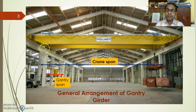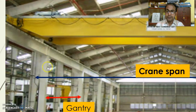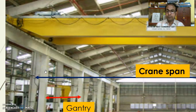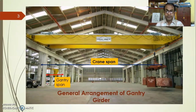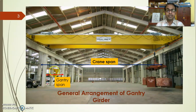We can see here the columns provided — this is a stepped column where the lower thicker portion supports the gantry girders and is known as the crane leg. The upper portion of the column is known as the roof leg. Above the crane girder, there is the crab unit, also called the trolley unit.